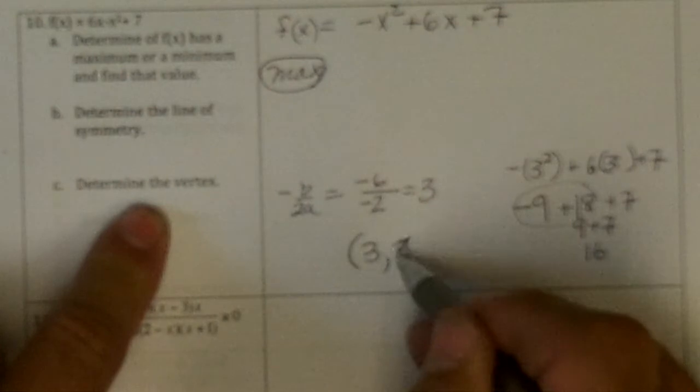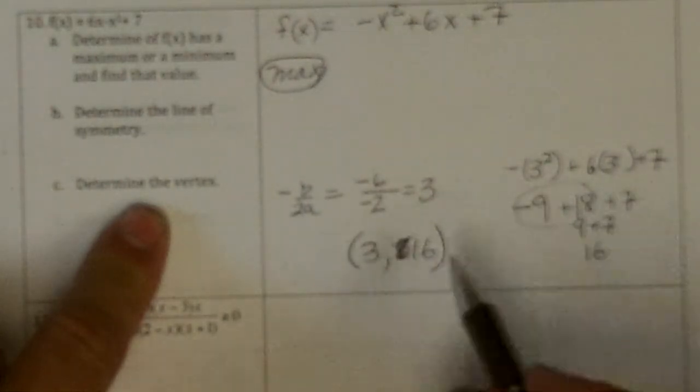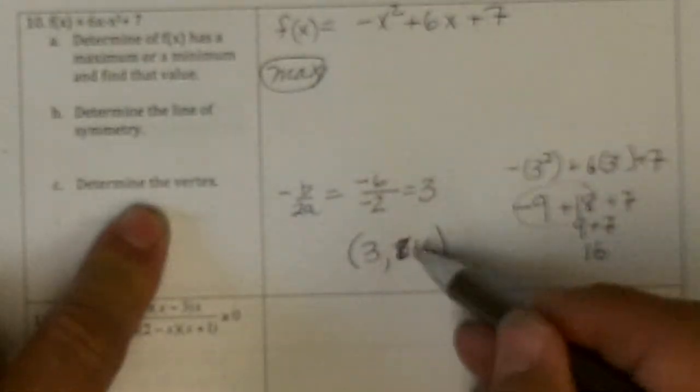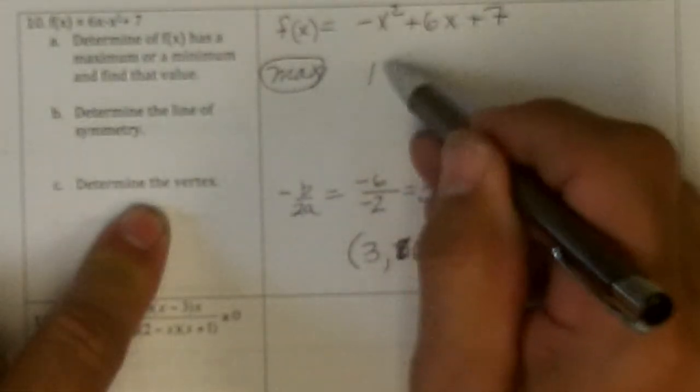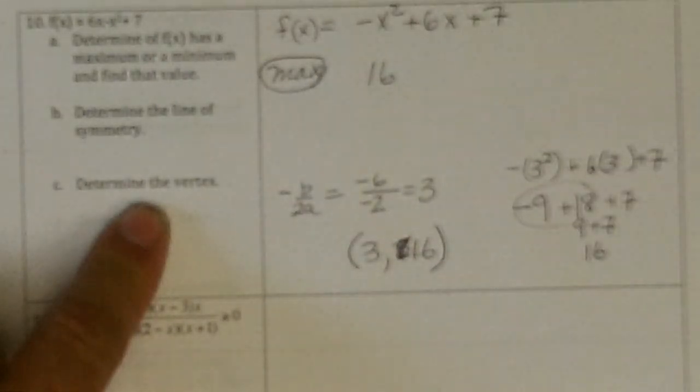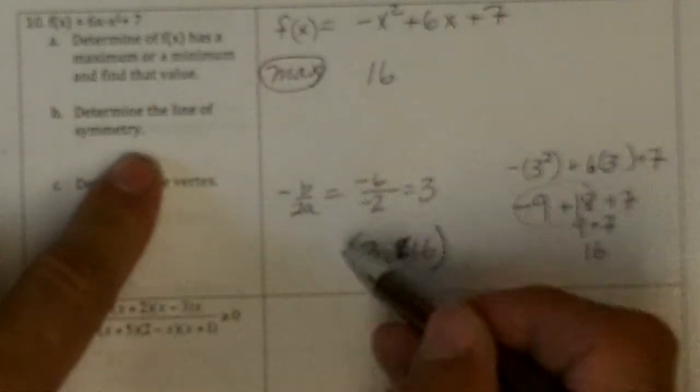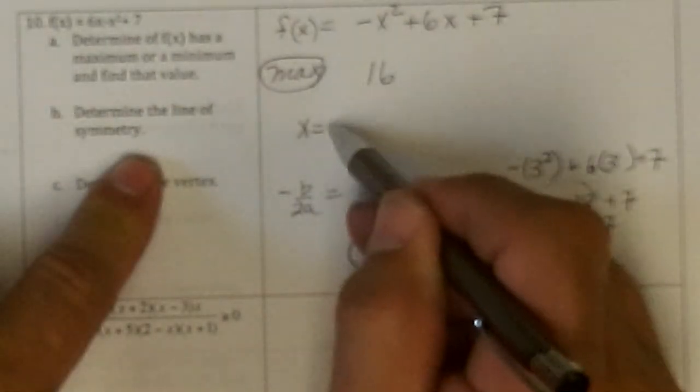Yeah, 16. So the maximum is 16. The line of symmetry is x equal 3.